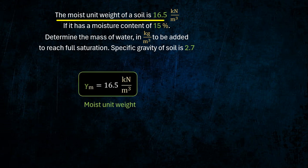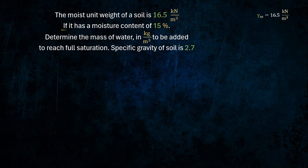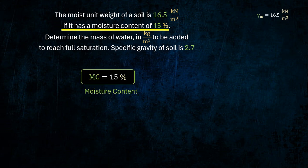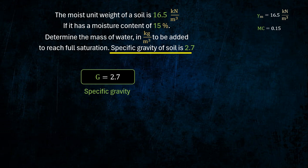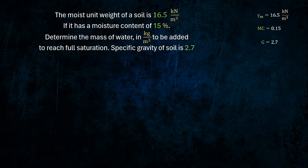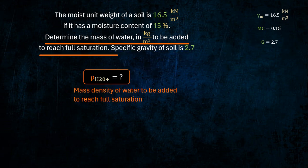Given: Moist unit weight. Moisture content. Specific gravity. Find: Mass density of water to be added to reach full saturation.